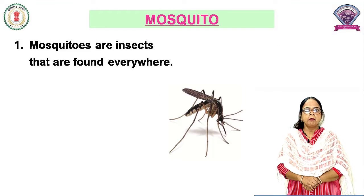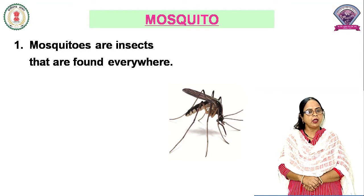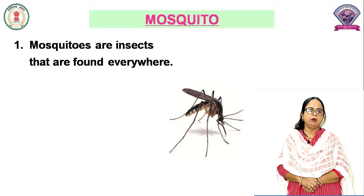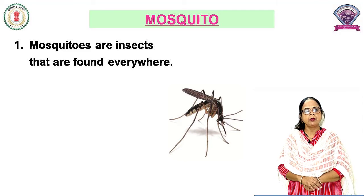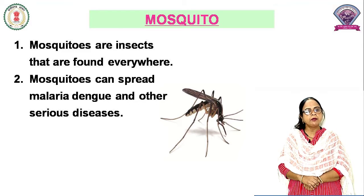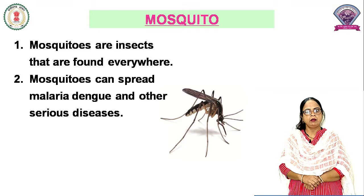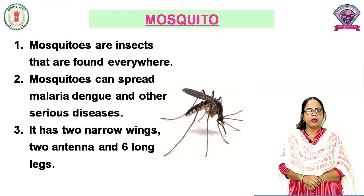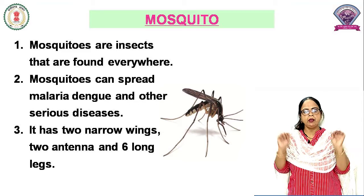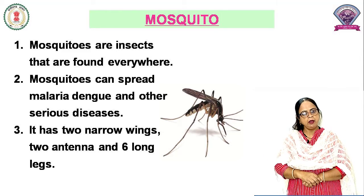First is Mosquito. Mosquitoes are insects that are found everywhere. Mosquito means Machar. Machar har jagah paya jata hai. Mosquitoes can spread malaria, dengue and other serious diseases. Machhar ke kaatne se malaria, dengue aur bahut saari gambhir bimariyan failti hain. It has two narrow wings, two antenna and six long legs.